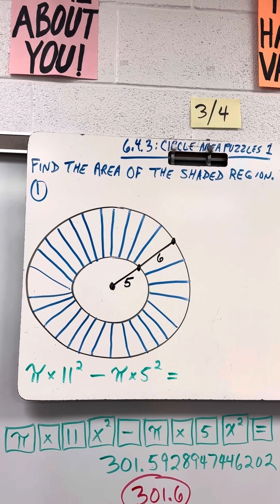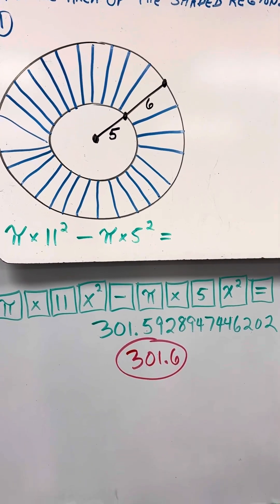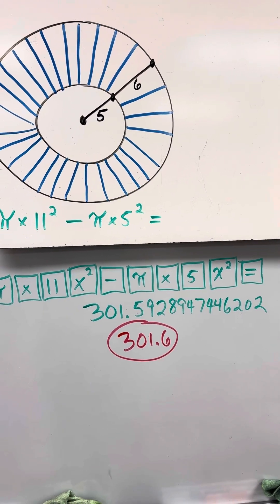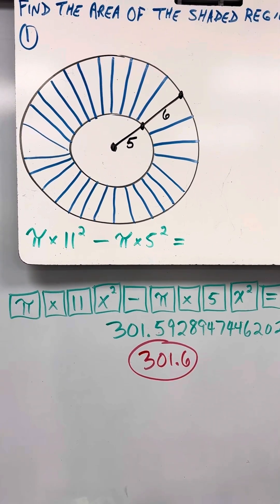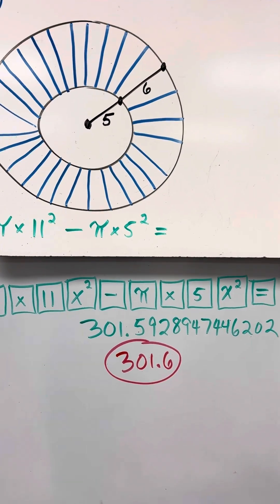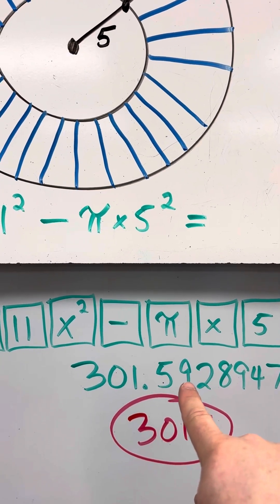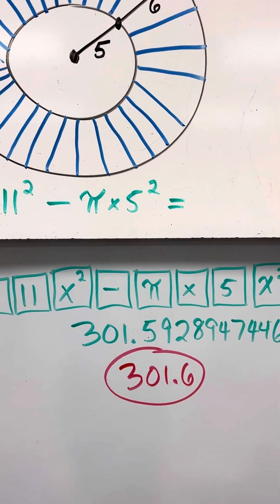You should pause the video to try this. Notice that you will get 301.5928947446202. On your delta math assignment, you have to round to the nearest tenth. That's the first decimal place. So because this number is 5 or bigger, it rounds to 301.6.